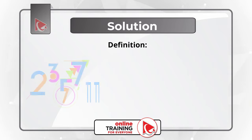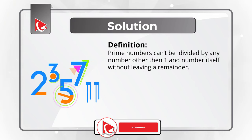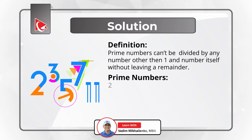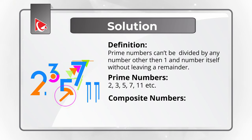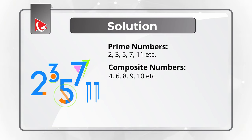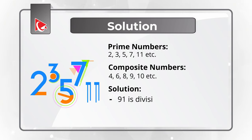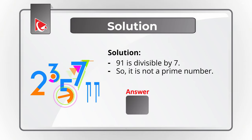To solve this challenge, let's start with the definition of a prime number. Prime numbers cannot be divided by any number other than one and the number itself without leaving a remainder. Some examples of prime numbers are 2, 3, 5, 7, 11, and so on. The opposite of prime numbers are composite numbers — examples include 4 (divisible by 2), 6 (divisible by 2 and 3), 8 (divisible by 2 and 4), 9, 10, and so on. Out of the numbers presented, 91 can be divided by 7, so 91 is not a prime number. The correct solution is Choice D: 91.